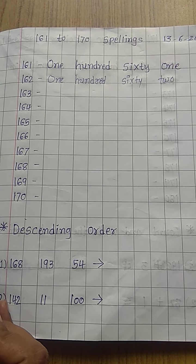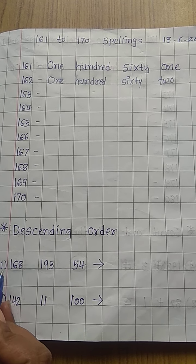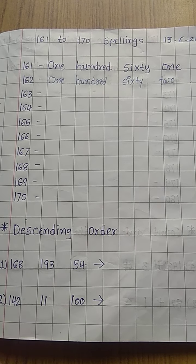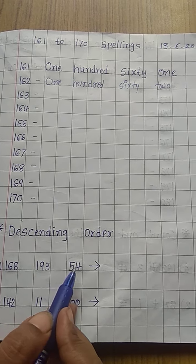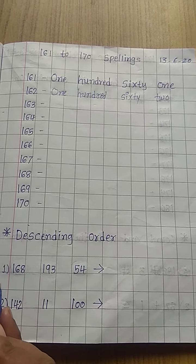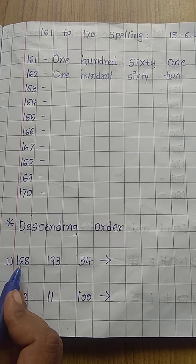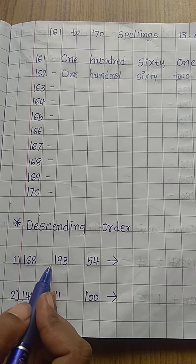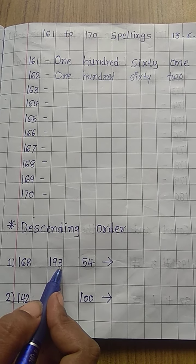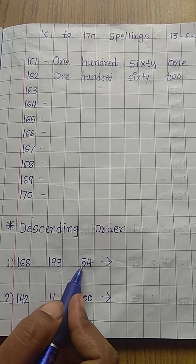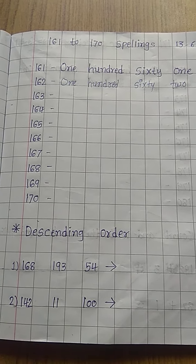Descending order means bigger to smaller number. Here given some numbers: 168, 193, and 54.